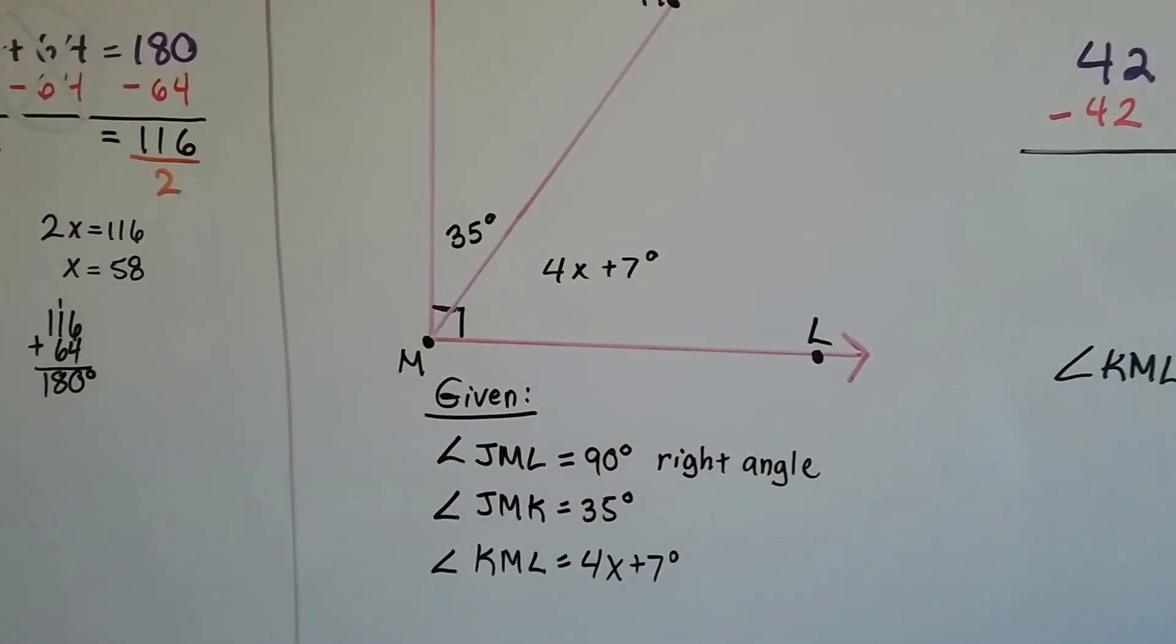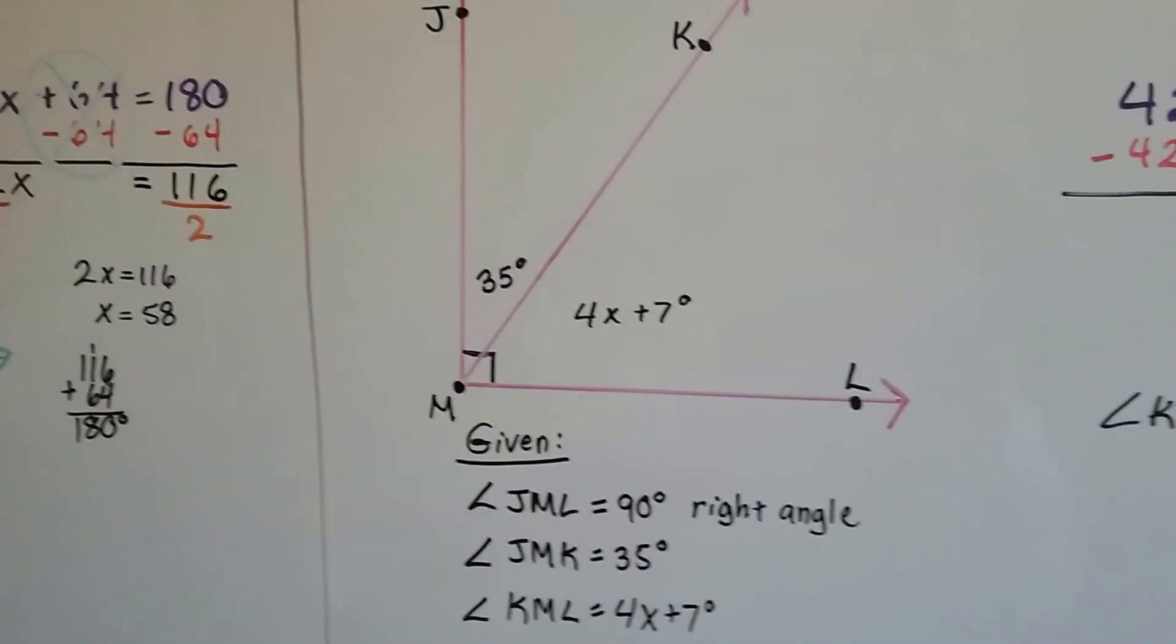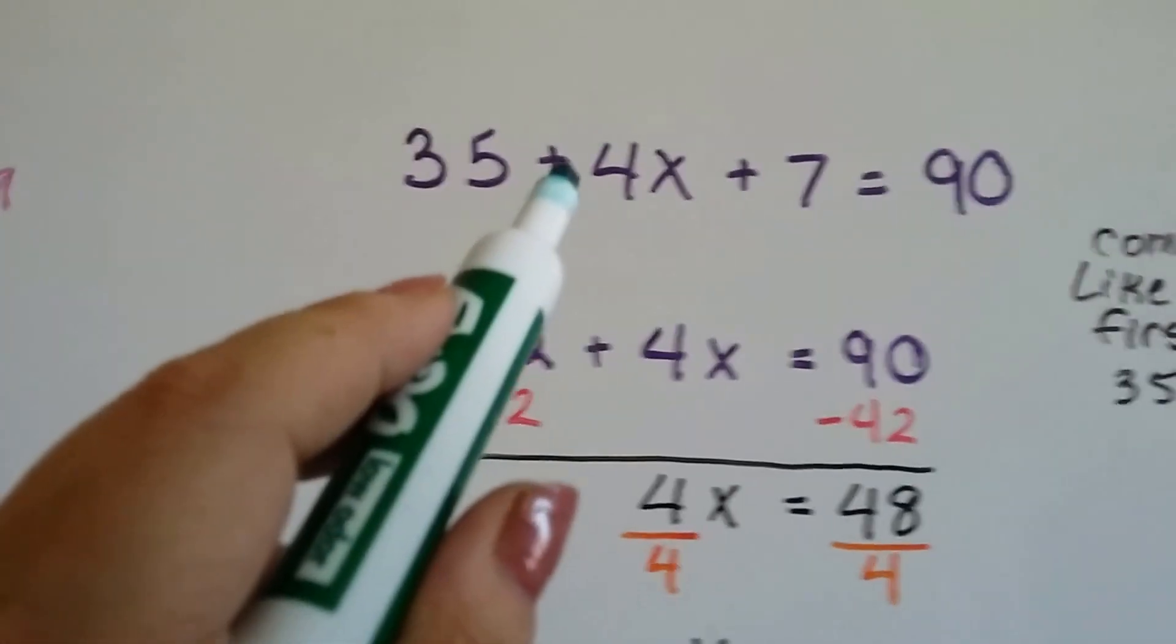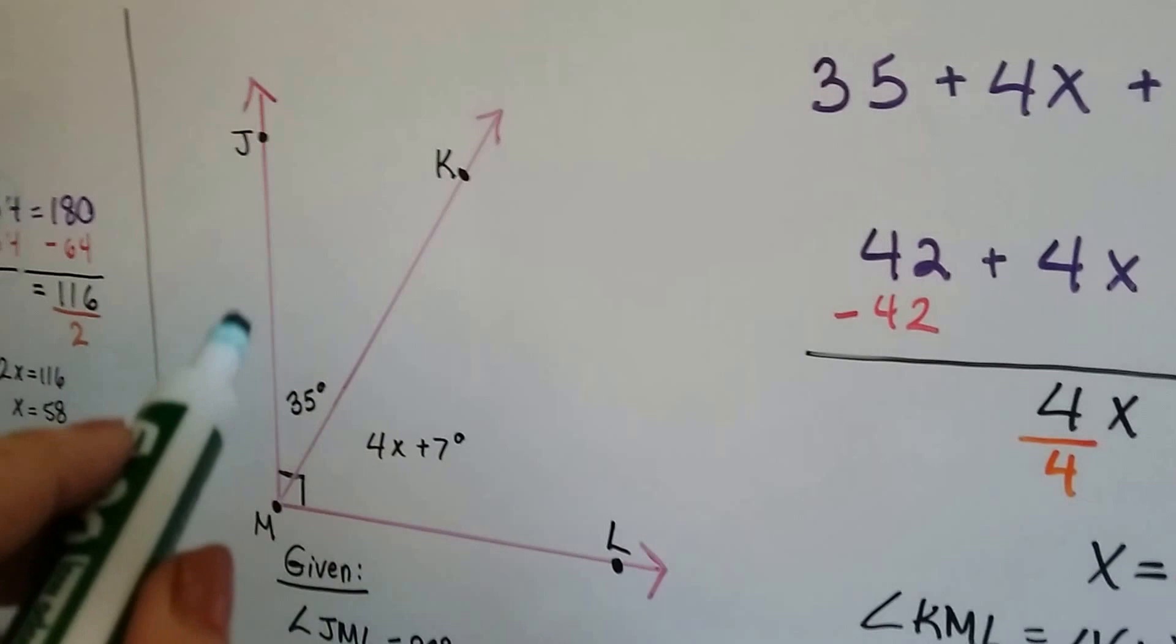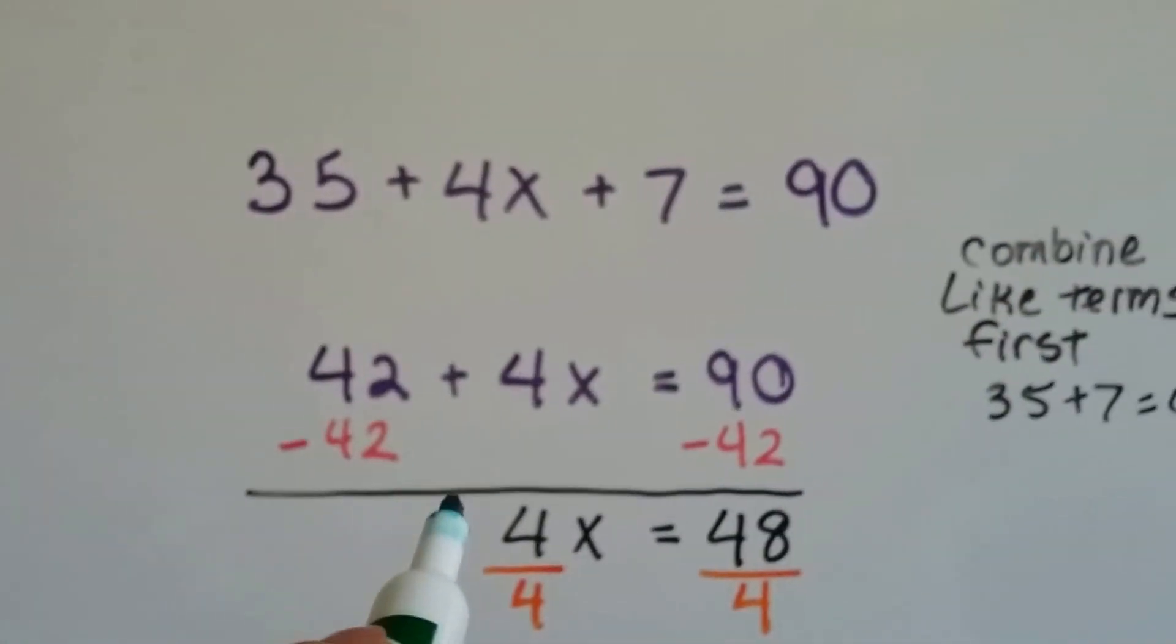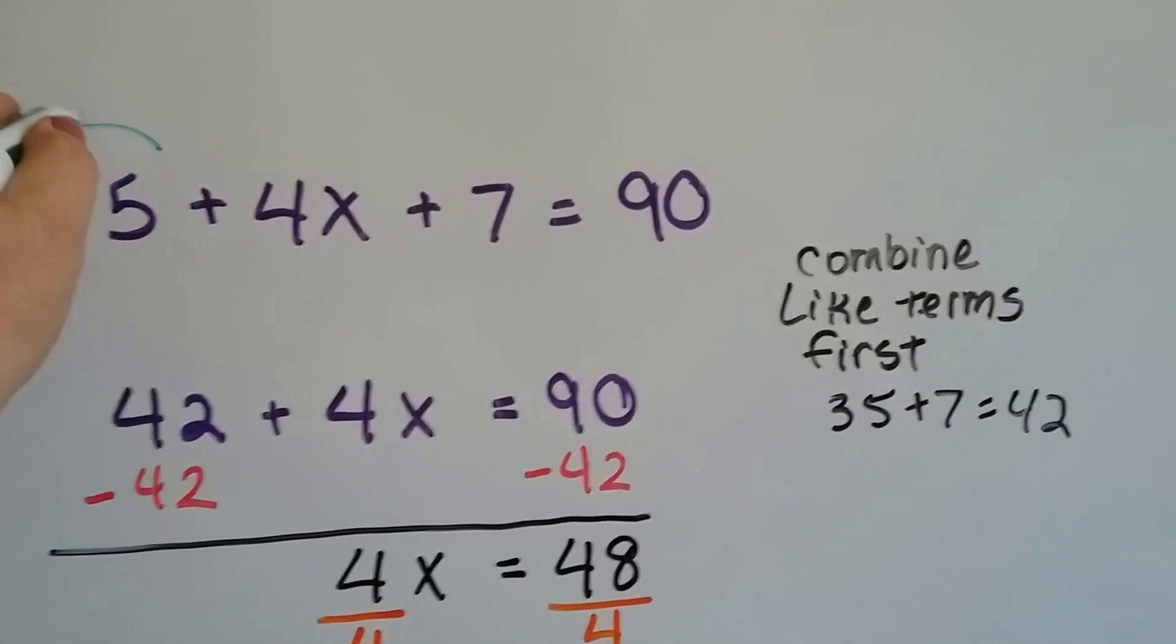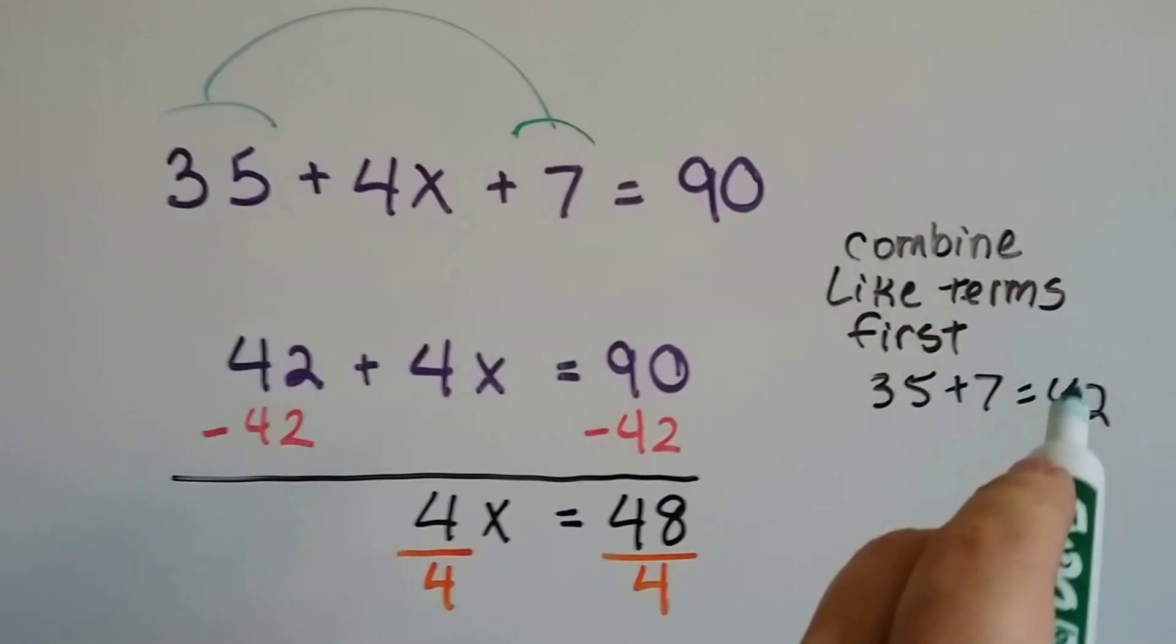We can write an equation with this. Because we know if this is a right angle, it must total 90. So here's what we get: 35 plus 4X plus 7 is going to equal 90. The 35 plus the 4X plus 7 should equal 90. So the first thing we do is we combine the like terms. The 35 and the 7 can be combined. We get 42.